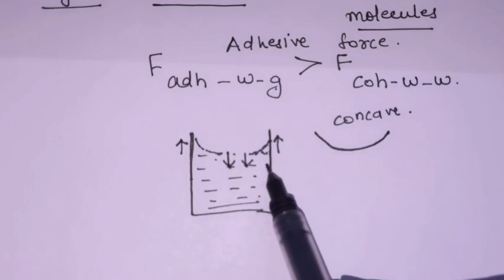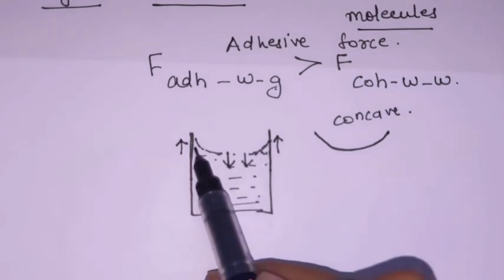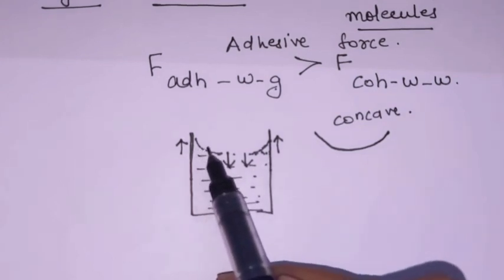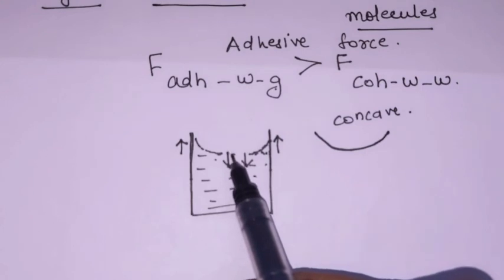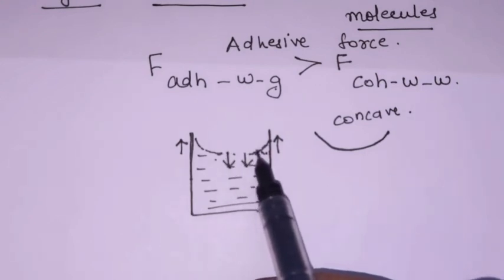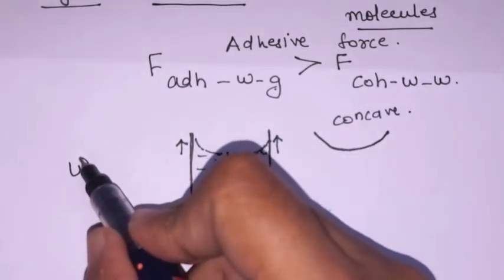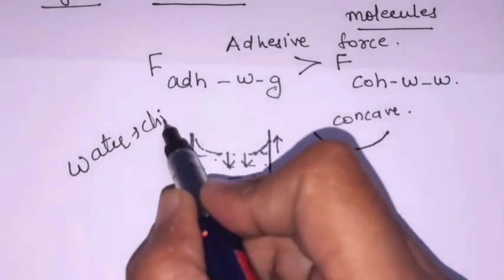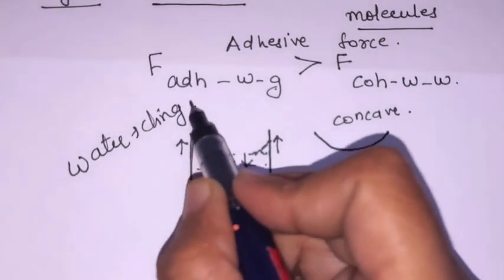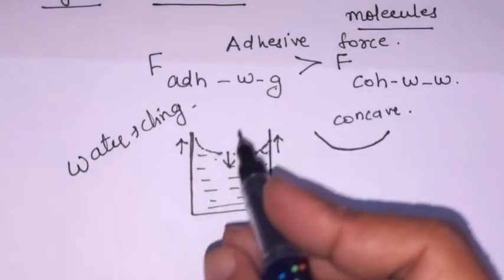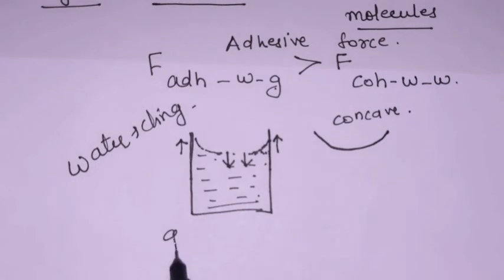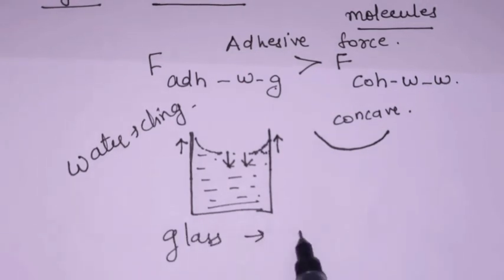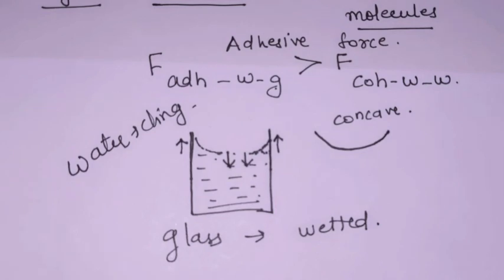Hence, whenever water is poured on the glass, the water molecules cling with the glass molecules — they stick with the glass molecules and the glass surface is wetted. This is a practical point.